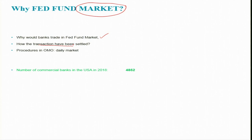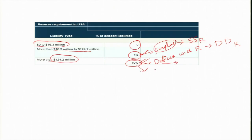Transactions are mainly settled through Fed accounts. Both small and large banks maintain accounts with the Federal Reserve System, so lending between banks is easily settled. When a bank faces a reserve deficit, it can quickly borrow from another bank and fulfill its reserve requirement within minutes through the Fed.